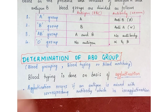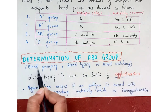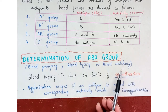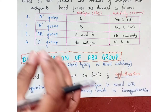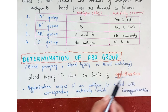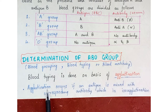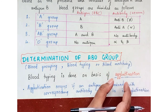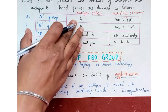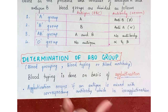Determination of blood group is also called blood grouping, blood typing, or blood matching. Blood typing is done on the basis of agglutination — if antigen A is mixed with anti-A, agglutination occurs, which is clumping or piling up of RBCs, also called isoagglutination.